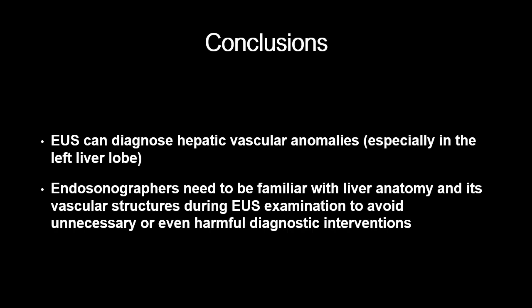In conclusion, EUS can diagnose hepatic vascular anomalies, especially in the left lobe of the liver. Endosonographers need to be familiar with liver anatomy and its vascular structures during EUS examination to avoid unnecessary or even harmful diagnostic interventions.